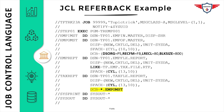Now for the text report file, I've used the referback statement to copy the DCB properties from the previous DD statement, EMPOMAST, which is the output master file. You simply specify the parameter DCB, followed by an equal sign, then asterisk.EMPOMAST — this is the DD name. If you are referring to a previous step in the JCL, you must specify the step name followed by the DD name. We have a separate example on the next slide for that scenario.